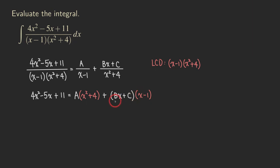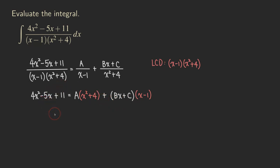The next step is to expand. If you have seen my other videos, we actually have been plugging in some x values to make some terms go away and figure out the constants. But in this case, because there are not too many terms, it may be a good idea to just expand this and match the coefficients. So we get 4x squared minus 5x plus 11 equals. Let's expand the right side: we get Ax squared plus 4A.